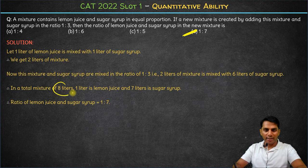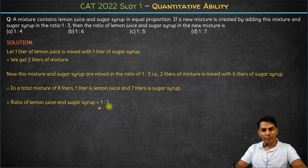Total 8 liters of mixture we will have, and that will contain 1 liter of juice and 7 liters of sugar syrup. So the answer here is 1 is to 7. Thank you.